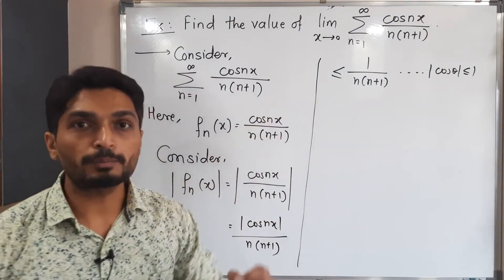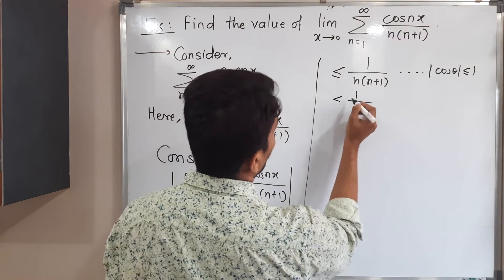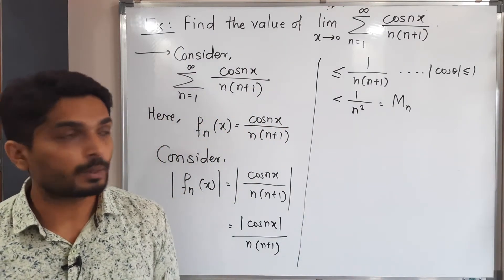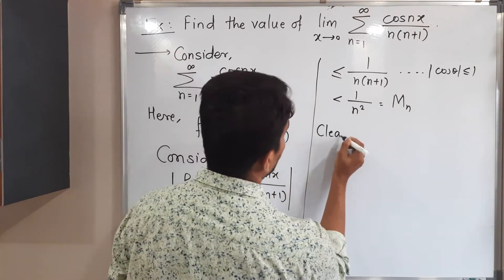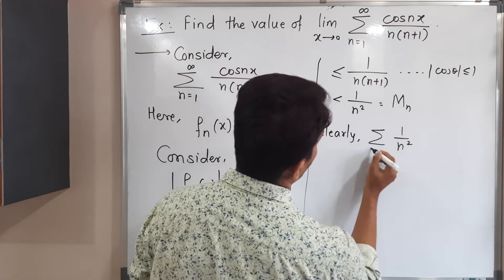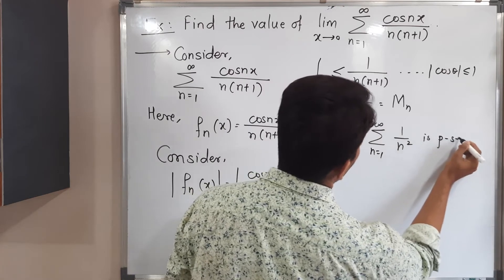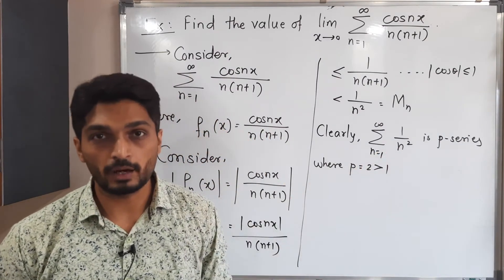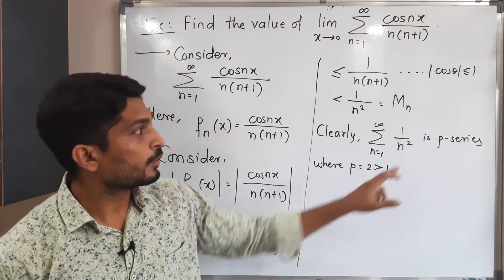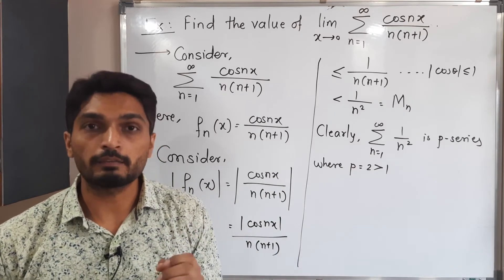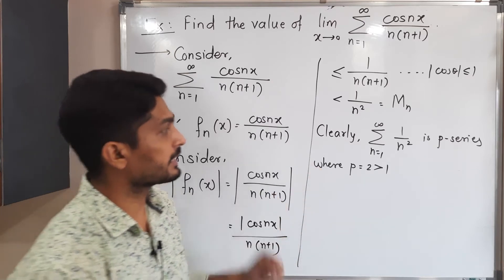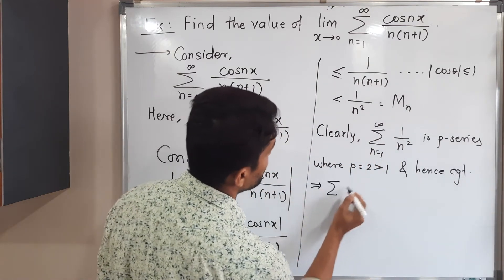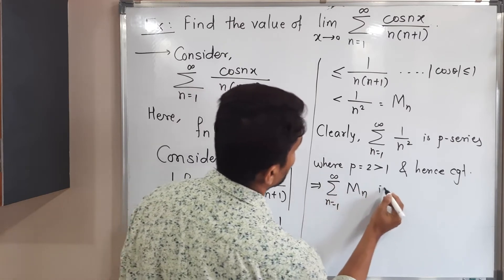If we reduce the denominator, the value will get increased. So if we remove the 1, we have 1/[n(n+1)] ≤ 1/n², which we call M_n. Since we know that in the Weierstrass M-test M_n is required, we take this as M_n. Clearly, the summation of 1/n² running from 1 to infinity is a p-series where p = 2, which is greater than 1. We know that if p > 1, the p-series is convergent. So this is a convergent series, meaning summation of M_n from 1 to infinity is convergent.